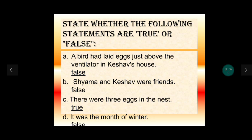Statement B: Shiyama and Keshav were friends. क्या Shiyama और Keshav दोस्त थे? नहीं — वो तो भाई-बहन थे. तो ये statement भी false हो गया. Statement C: There were three eggs in the nest. घोसले में तीन अंडे थे. ये तो एक सही निकला — इसमें हम true लिखेंगे, क्योंकि अंडे तीन ही थे.